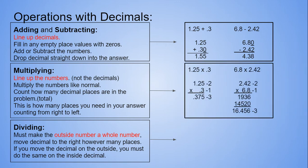Multiplying, you want to line up your numbers, not the decimals. You multiply your numbers like normal. And then you count how many decimal places you have in the problem, which is the total here: 2 and 1 gives us 3. And that's how many you need in your answer, counting from right to left to place your decimal.